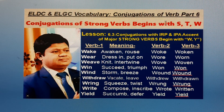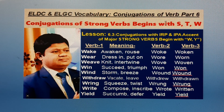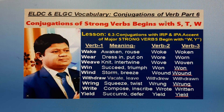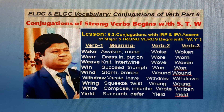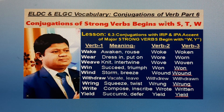Lesson 6.3: Conjugations with IRP and IPA accent of major strong verbs beginning with W and Y. Verb B1: Wake. English meaning: Awaken, arouse. Bangla meaning: Ghum theke jaga. B2: Woke. B3: Woken. Verb B1: Wear. English meaning: Dressing, put on. Bangla meaning: Puridhan kura. Verb B1: Weave. English meaning: Knit, intertwine. Bangla meaning: Boyan kura.